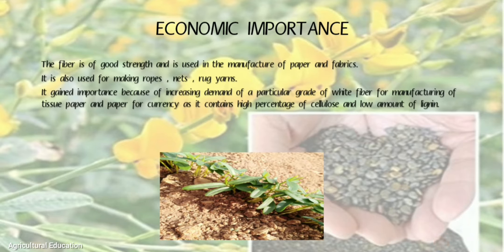Sunhemp fiber is of good strength and is used in the manufacture of paper and fabrics. It is also used for making ropes, nets, rugs, and yarns. It gained importance because of increasing demand for a particular grade of white fiber for manufacturing tissue paper and currency paper, as it contains high cellulose percentage and low amount of lignin.